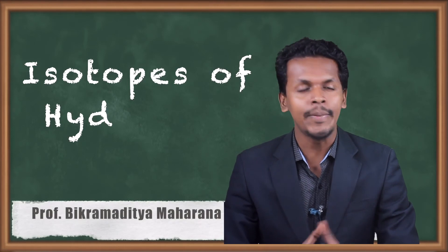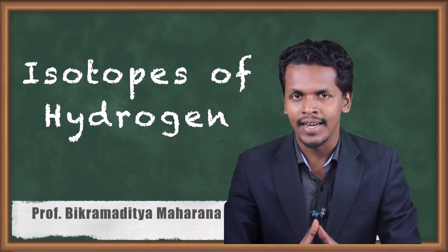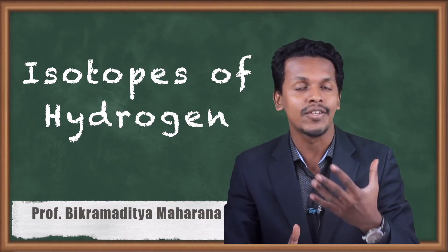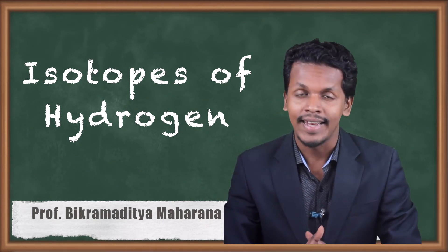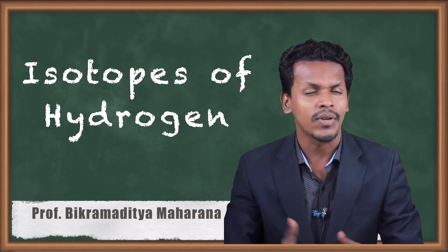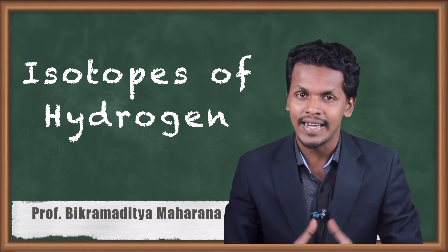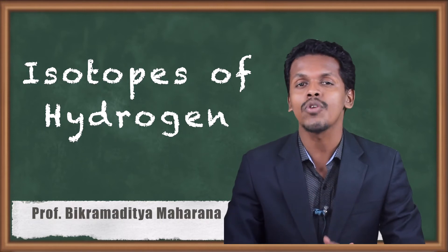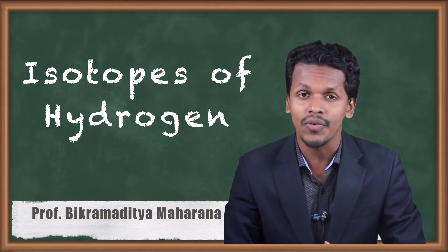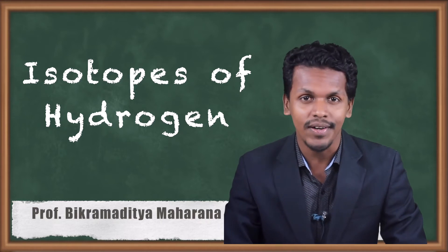Hello friends. In the periodic table there are 118 elements, and many of them show isotopes — for example carbon and chlorine. In this topic we are going to discuss the different types of isotopes of hydrogen and what they are called.